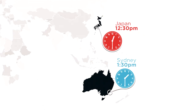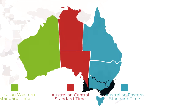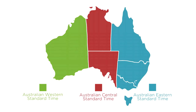Japan is in a different time zone to the eastern states of Australia. Over in Perth, it's 11.30am now, so Japan is in a different time zone from Perth as well. Australia is a large enough country to have more than one time zone. In fact, it's got three.